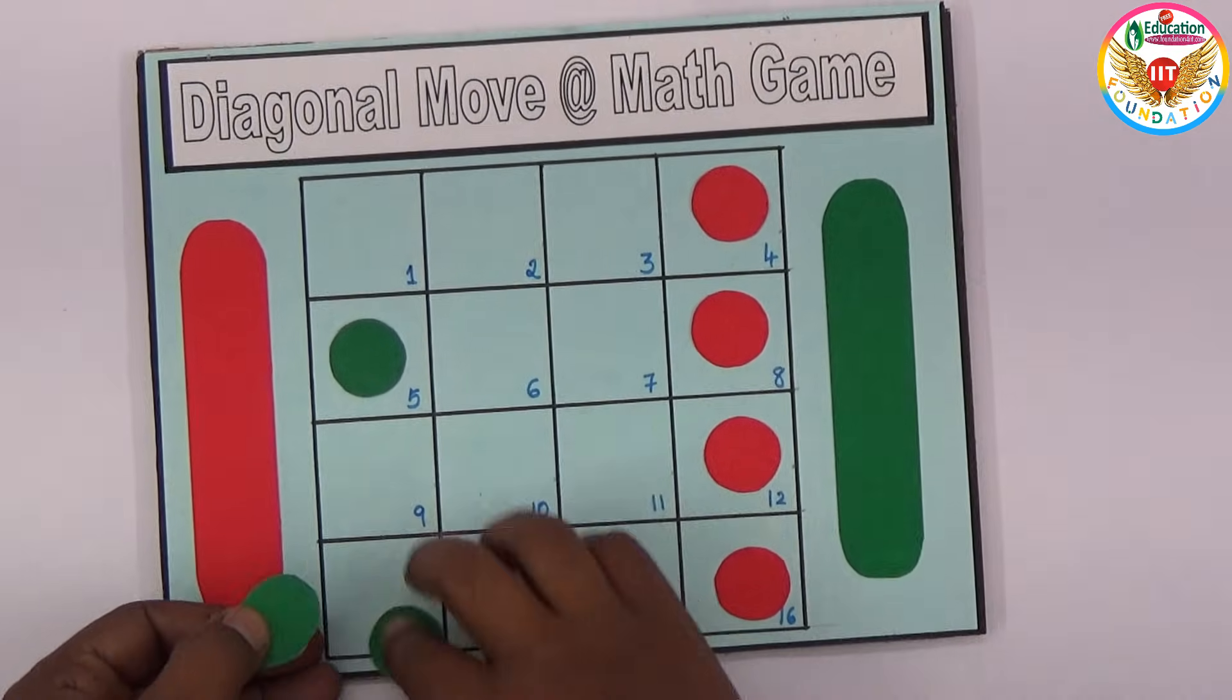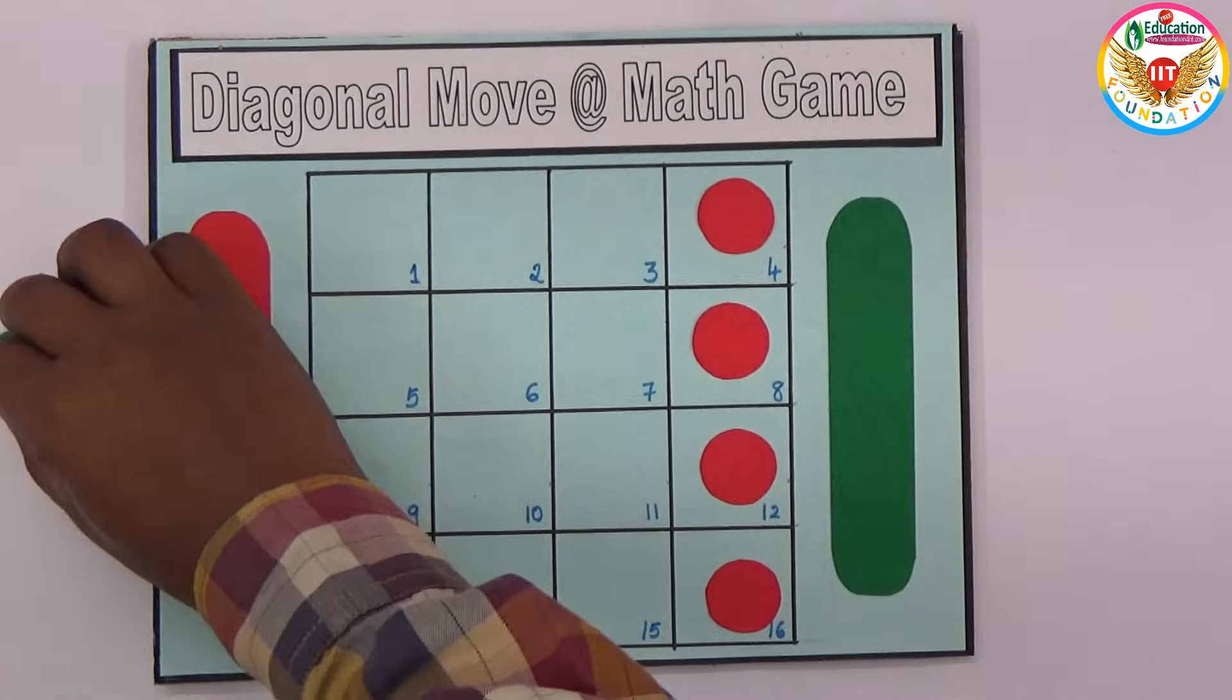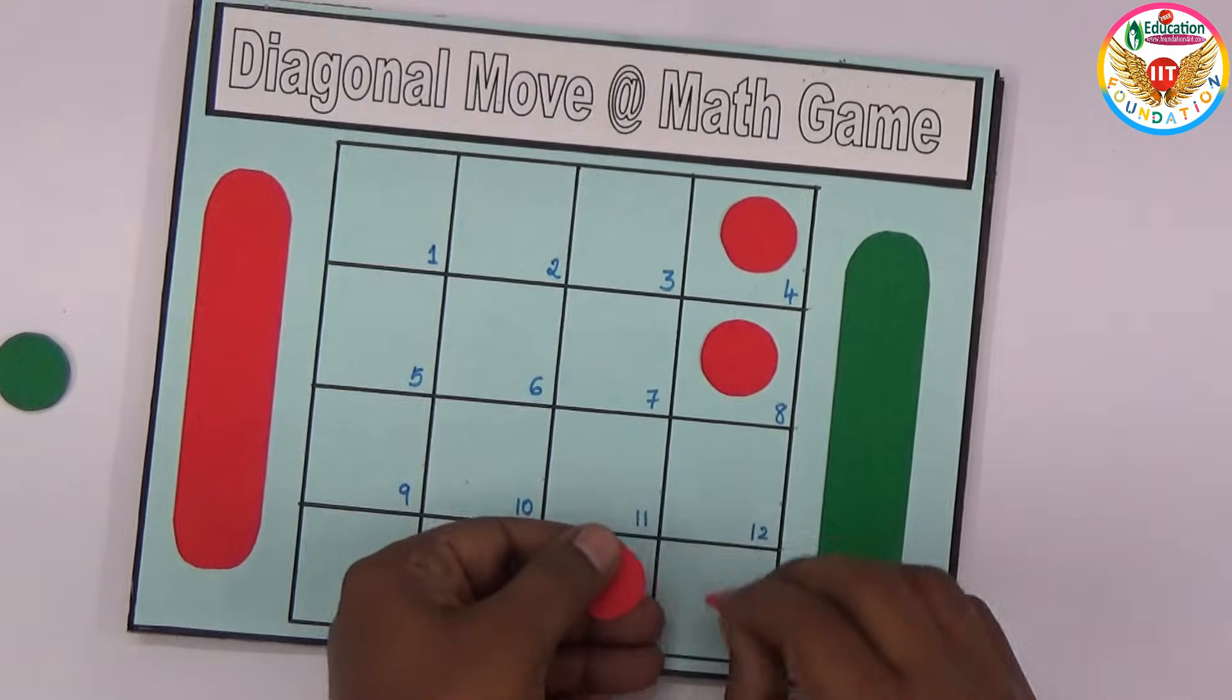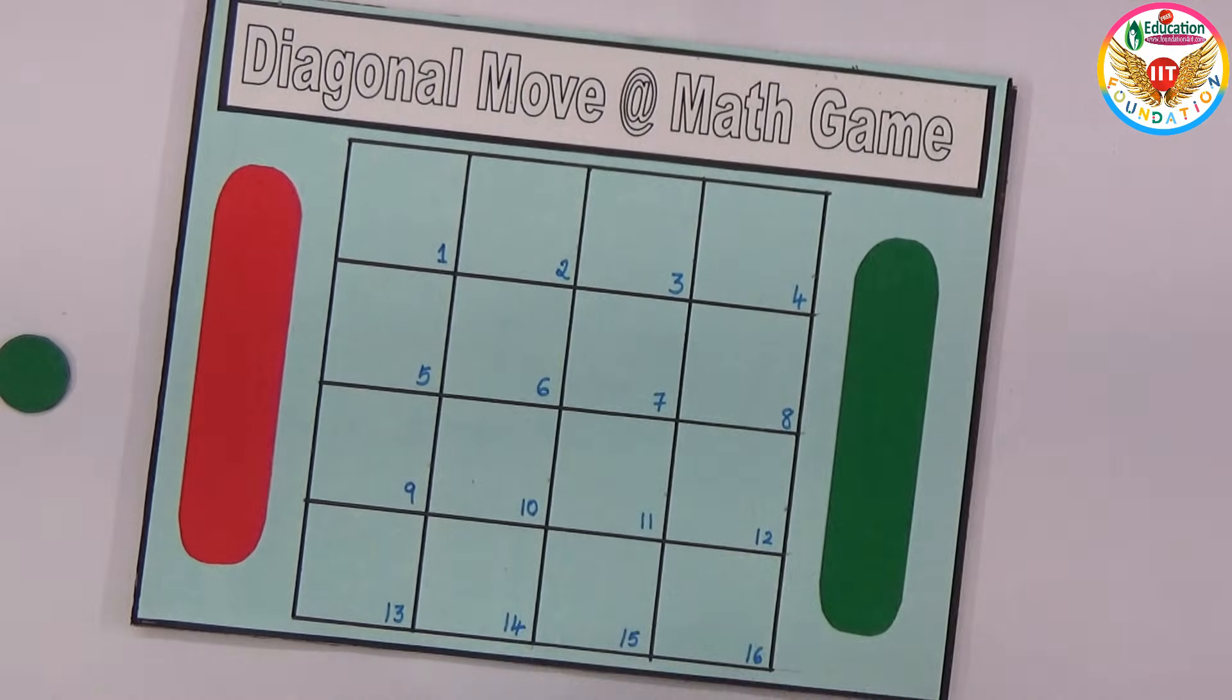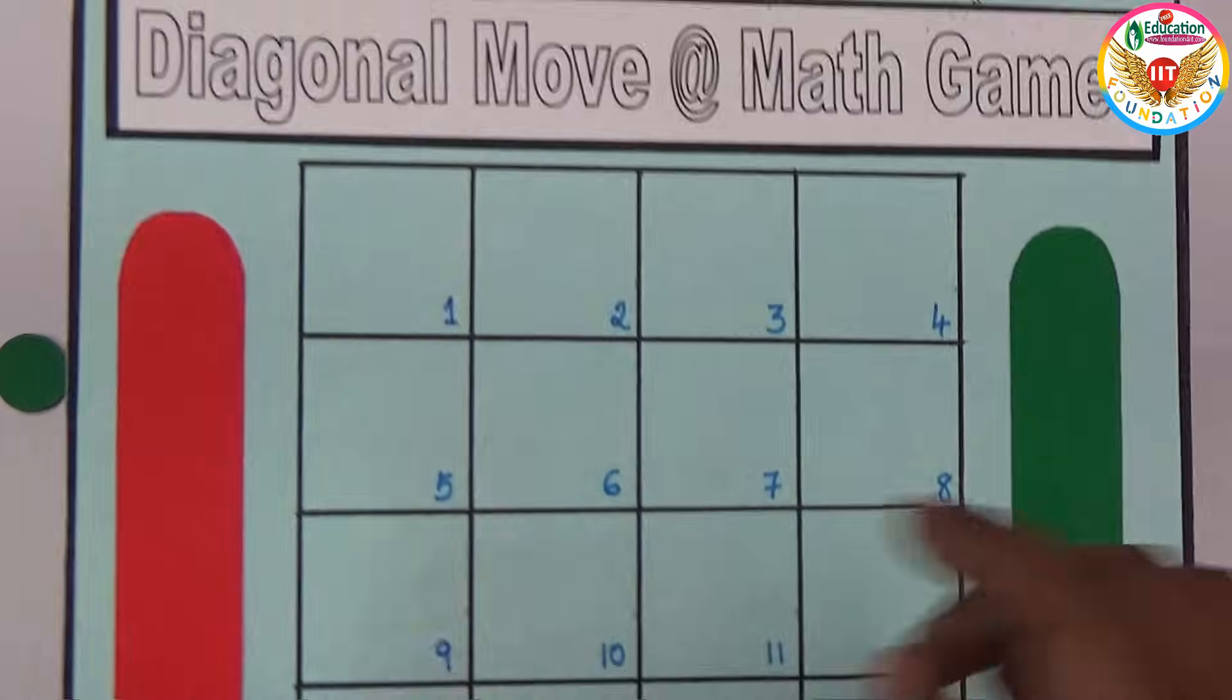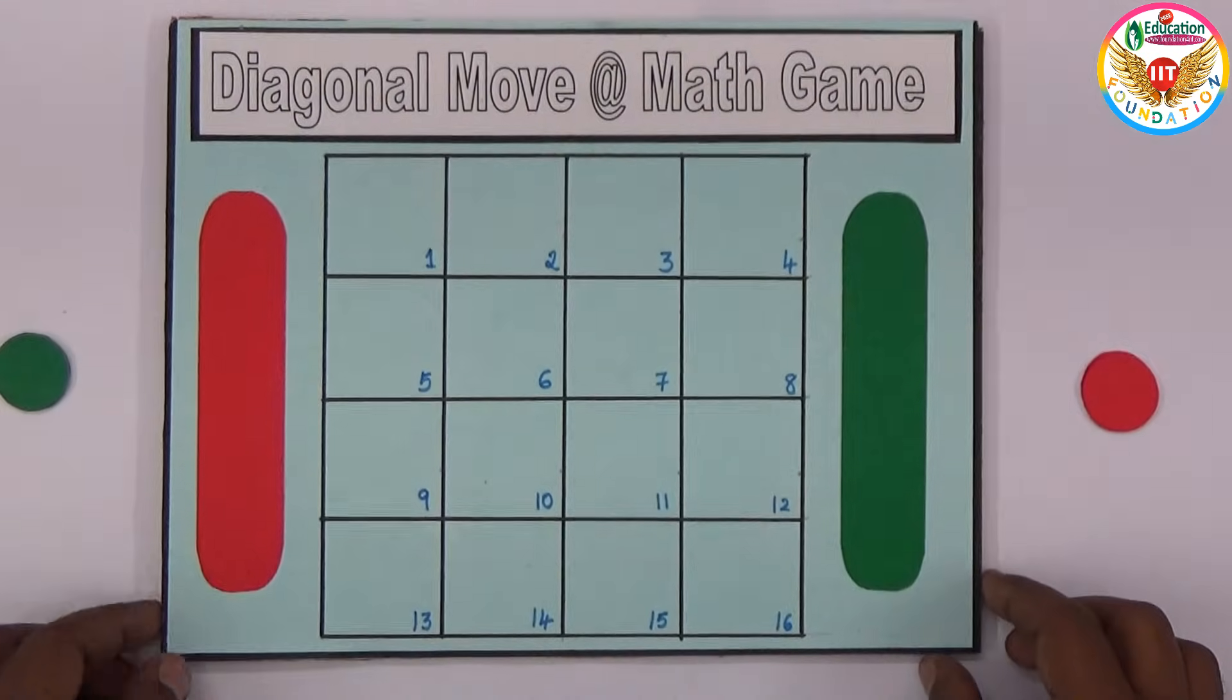Here are four green color and four red color circle pieces. This is a four by four box - four rows and four columns. I pasted it on cardboard and prepared it this way.